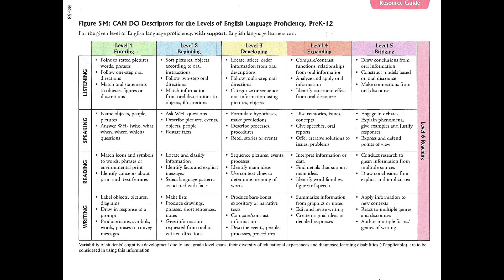You would use this in order to create the assignment that you want them to do. If we're looking at the different domains, listening and reading are the domains where students intake information, while speaking and writing are the domains where they output information. When we're talking about product, we're really looking at the speaking and writing domains. So for the same level 2 student, they should be able to ask WH questions — who, what, when — describe pictures, events, objects, and people, and restate facts.